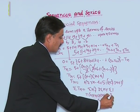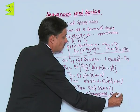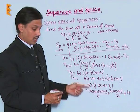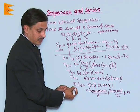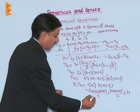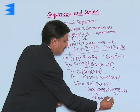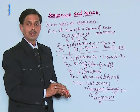If I simplify it I will get it is n into n plus 2 into n plus 4 divided by 3.